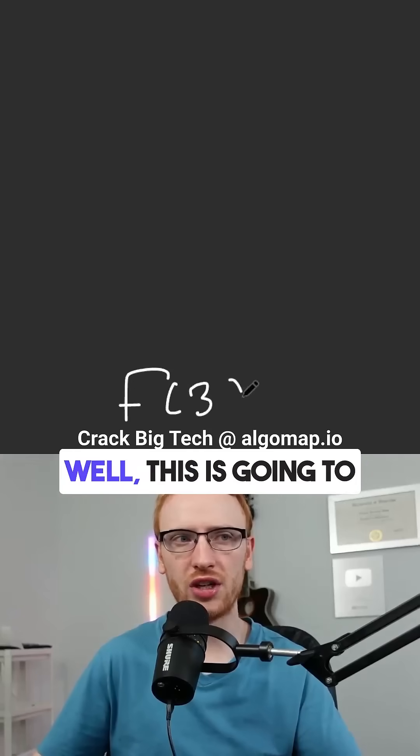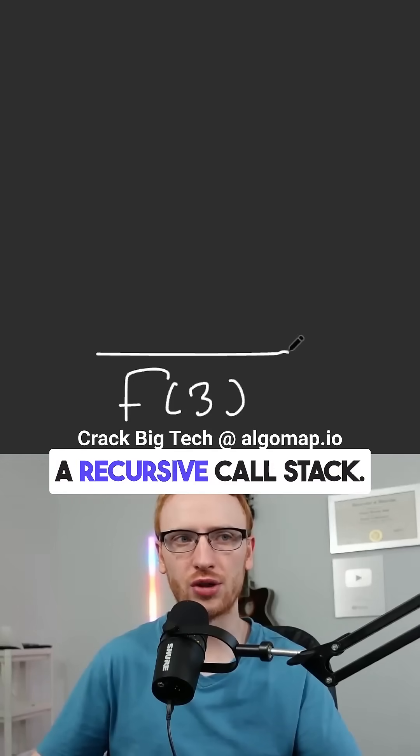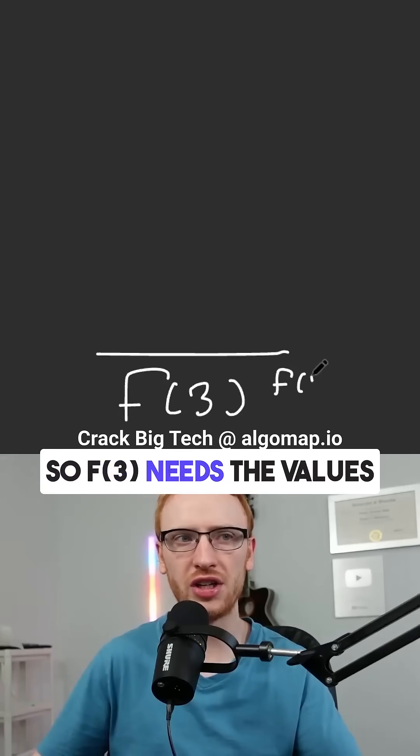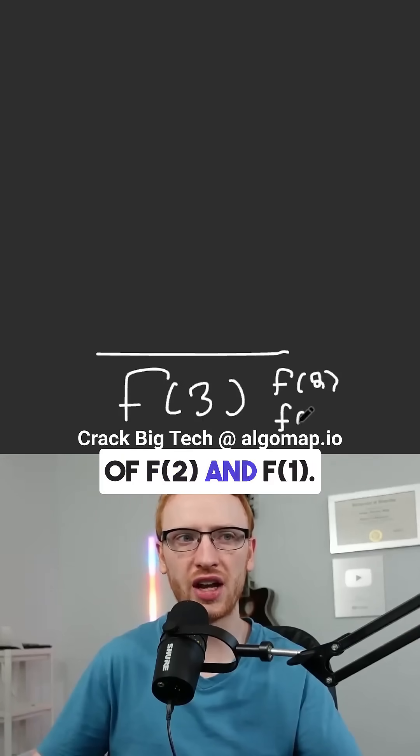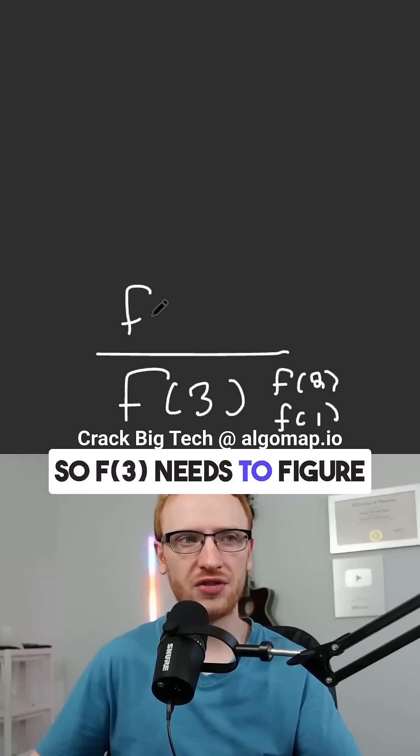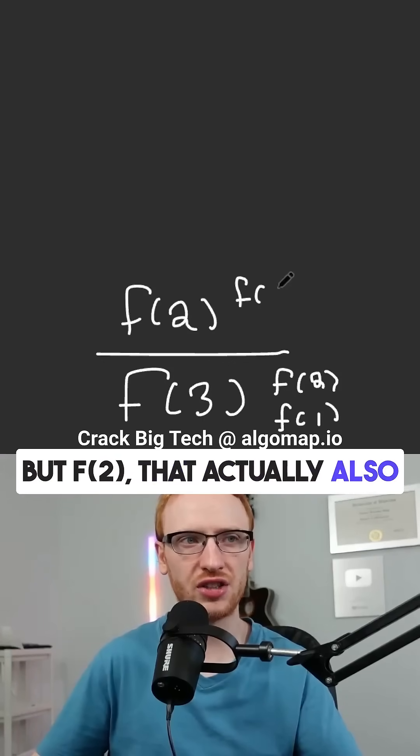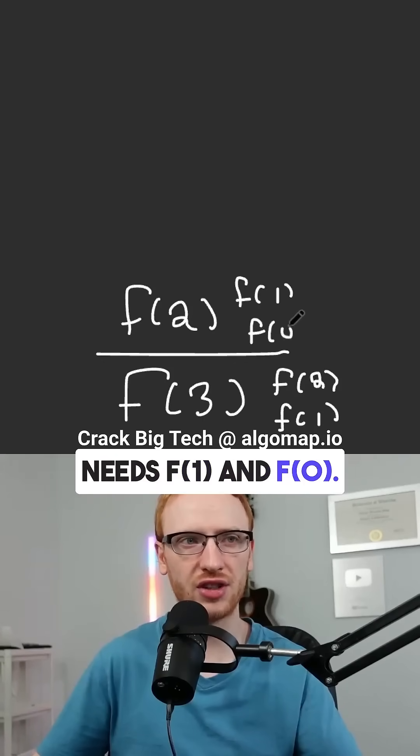So if we needed something like f at 3, well this is going to build what's called a recursive call stack. So f at 3 needs the values of f at 2 and f at 1. So f at 3 needs to figure out what f of 2 is, but f of 2, that actually also needs f at 1 and f at 0.